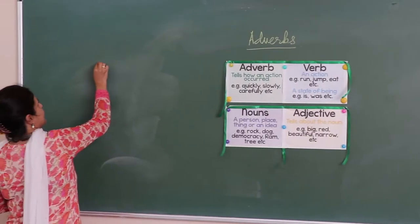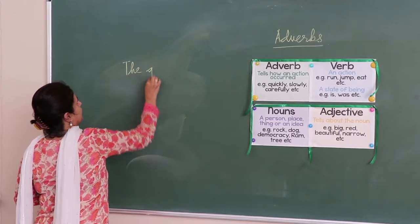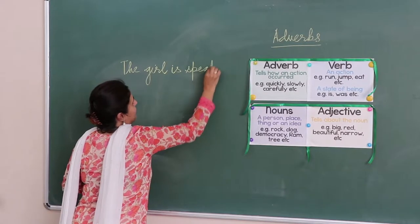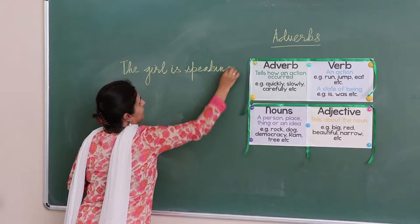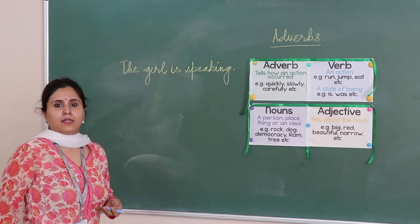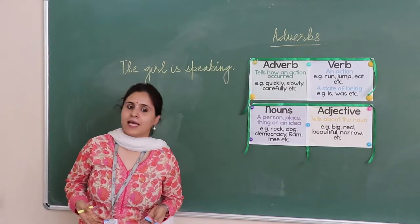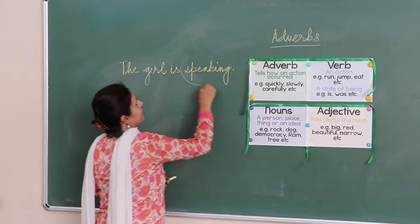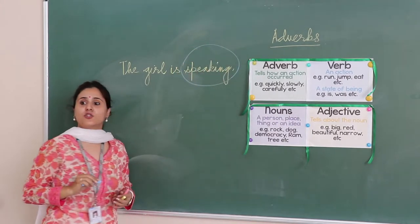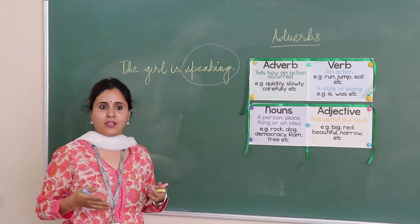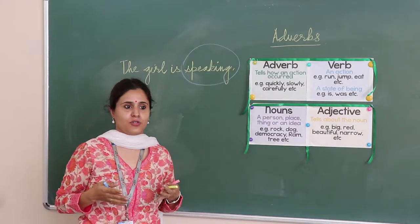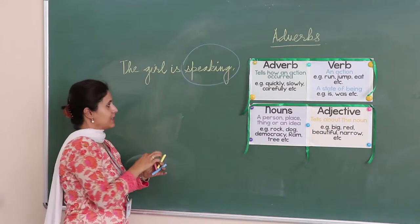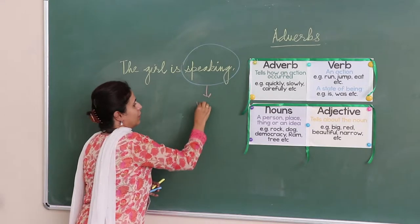If I write a simple sentence: 'The girl is speaking.' Can anybody tell me what is the action that is happening in this sentence? Speaking. Speaking is what the girl is doing — it is the action that is happening. Any word which talks about the action that is happening is called a verb. So speaking here is the verb.